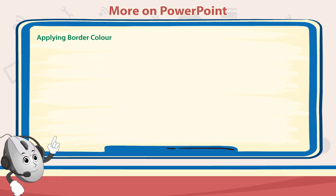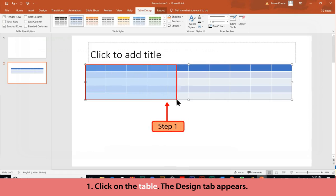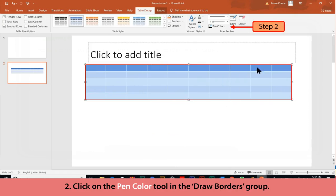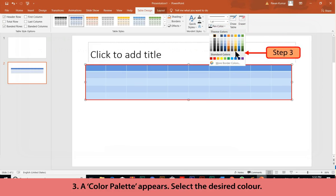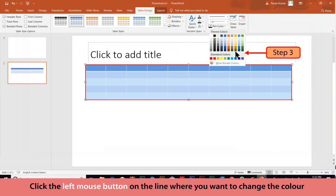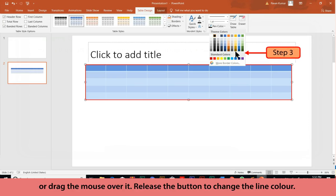Applying Border Color: Follow these steps to change the border color of the table. Click on the table — the Design tab appears. Click on the Pen Color tool in the Draw Borders group. A color palette appears. Select the desired color, then click the left mouse button on the line where you want to change the color or drag the mouse over it. Release the button to change the line color.